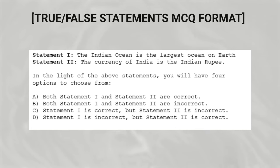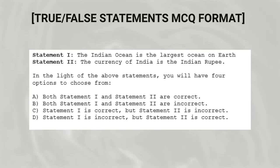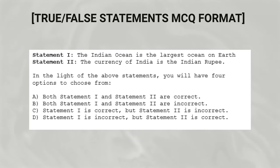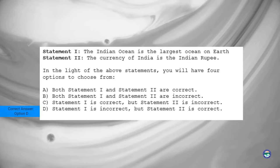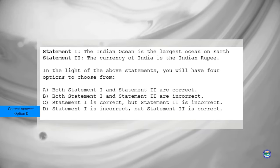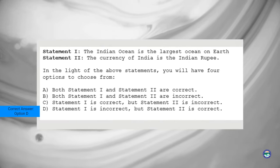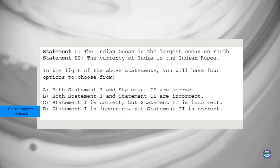Let's illustrate this format with an example. Statement 1: The Indian Ocean is the largest ocean on Earth. Statement 2: The currency of India is the Indian Rupee. Based on these statements, take a moment to evaluate the accuracy of each statement and select the most appropriate option.